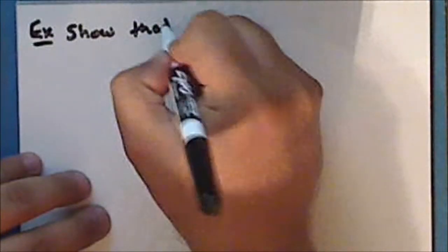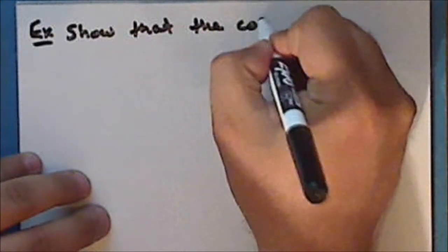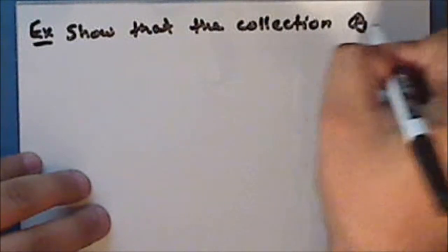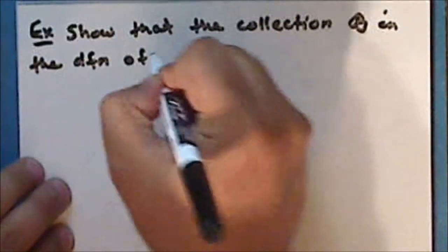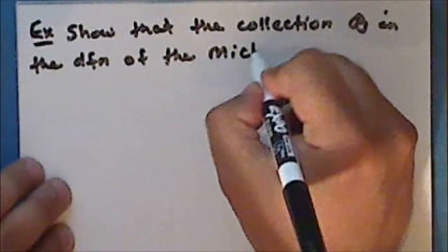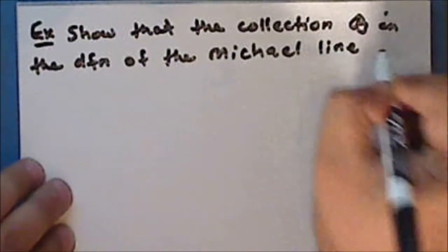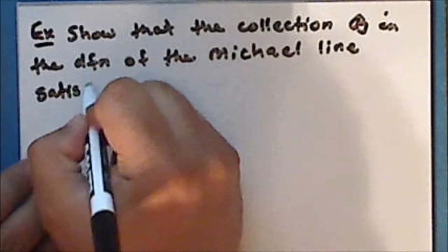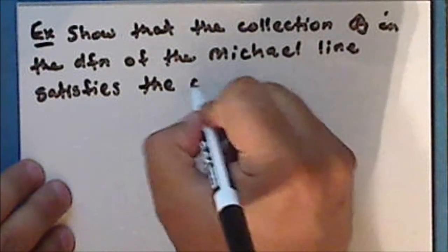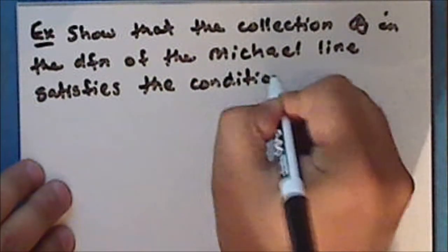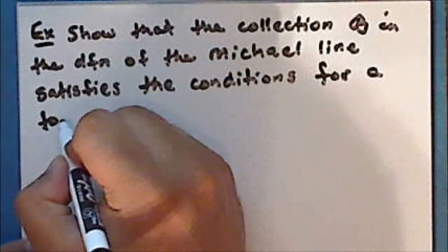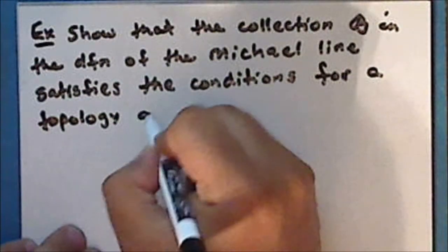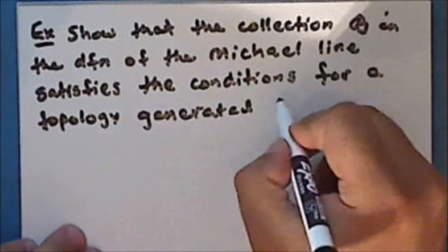As an exercise, show that the collection script B in the definition of the Michael line satisfies the conditions for a topology generated by a basis.